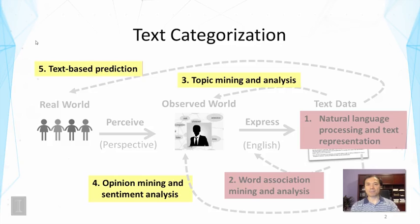Text categorization is relevant to the discovery of various different kinds of knowledge. First, it's related to topic mining and analysis, because it has to do with analyzing text data based on predefined topics. Secondly, it's related to opinion mining and sentiment analysis, which involves discovering knowledge about the human sensor — we can categorize authors based on the content of the articles they have written.